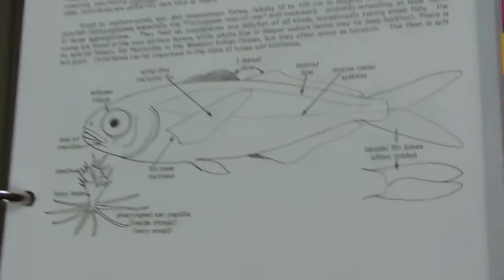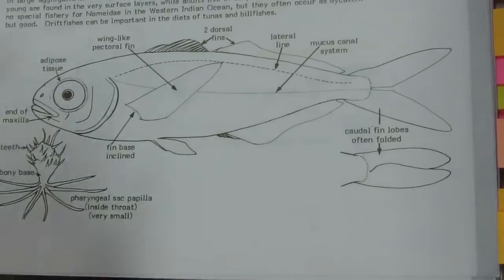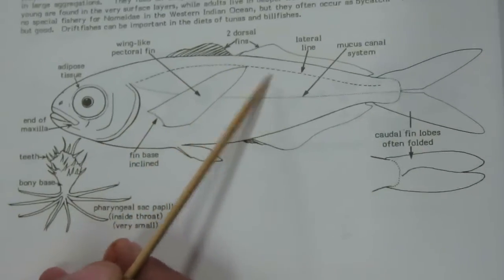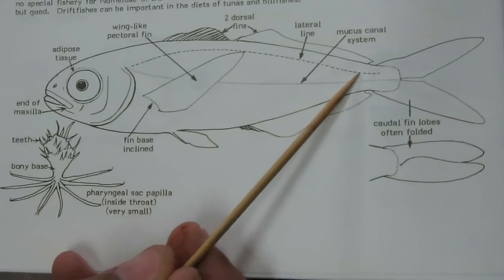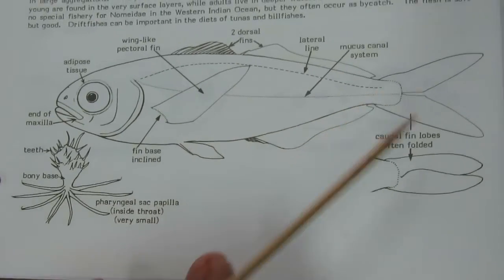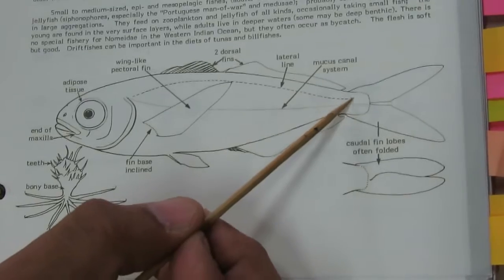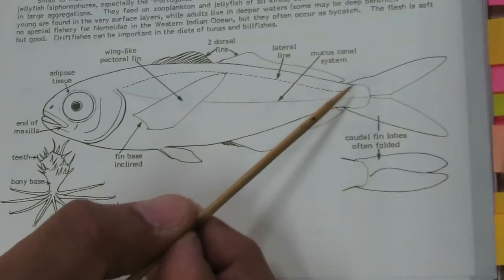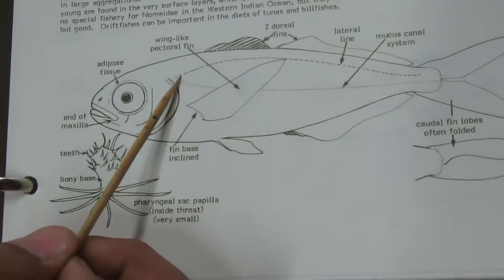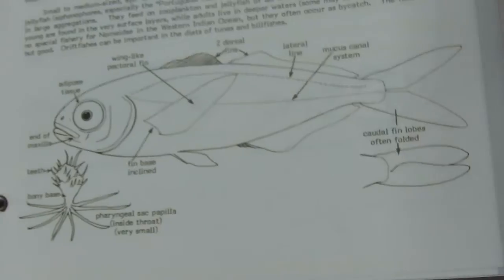Next is Nomeidae. The lateral line is high, following the dorsal profile, and often not extending onto the caudal peduncle. It does not go beyond the caudal peduncle area — it stays on the high side toward the dorsal side.